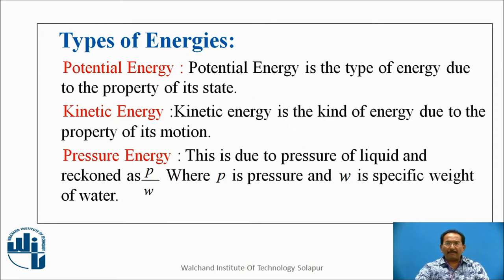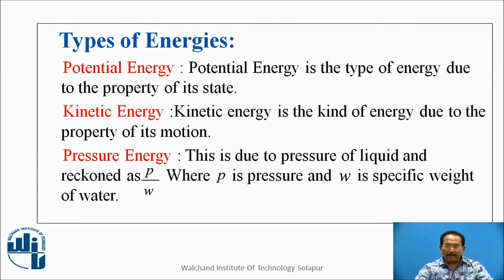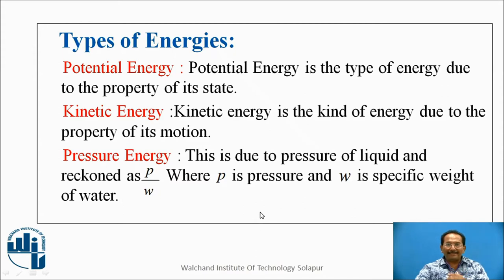Potential energy is a type of energy due to the property of its state — that is, where it is located. If a pipeline is there, you have to see from ground level, taking into account the height of that particular pipeline and the flow conditions. We take small z as the potential energy measured from the ground line or datum line.